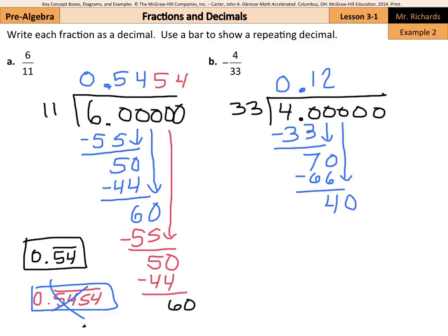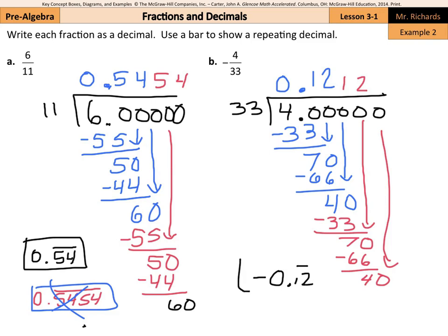Now, if you didn't recognize that right away, what you would see is 33 times 1 gets you 33. You subtract, and you get the 7, and you bring down your 0. And if you didn't recognize it with the 40, hopefully you're recognizing it now with the 70 that I've already done this. 33 goes into 70 two times, minus 66, and you get 4 with that 0 you're bringing down again. And at this point, you should recognize that this is repeating, and so our answer is going to be negative, don't forget that negative in the question, 0.12 with the bar over the 1 and the 2.